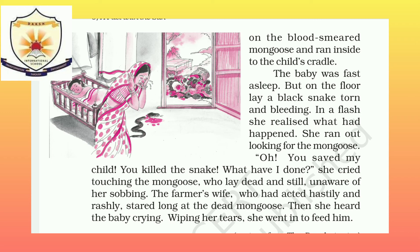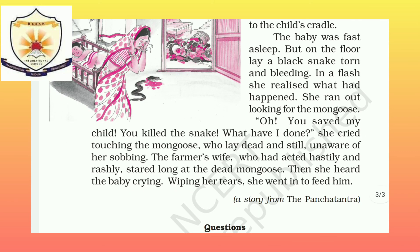'What have I done?' she cried, touching the mongoose. She tearfully started touching the mongoose. But the mongoose lay dead and still — completely dead, not moving at all, no sign of life. She had unknowingly done this — she had made a judgment without thinking and considered the mongoose guilty, which was very wrong. The farmer's wife, who had acted hastily and rashly, stared long at the dead mongoose.